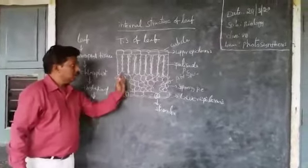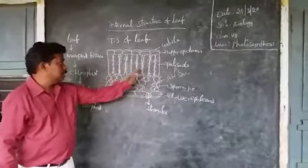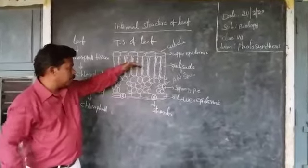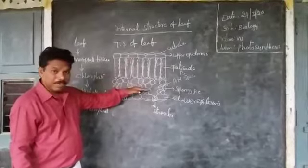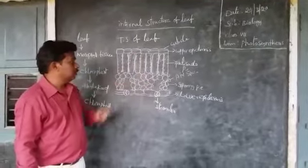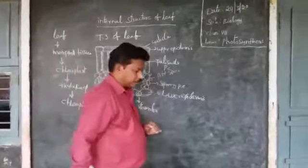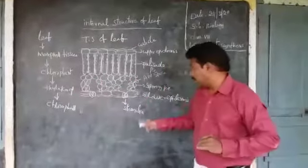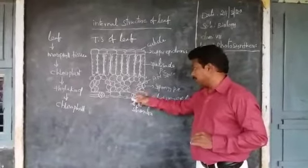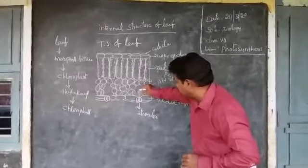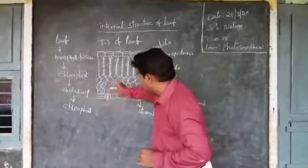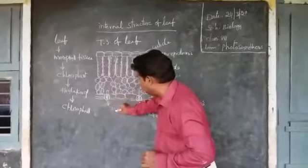So the rate of photosynthesis will be more in the palisade parenchyma and less in the spongy parenchyma. This is the entire cross-section of the leaf. Mostly, through the stomata, the carbon dioxide enters into the leaf. Carbon dioxide will enter into the leaf. And the oxygen will come out from the leaf. Oxygen is the byproduct of photosynthesis and will come out through the stomata.